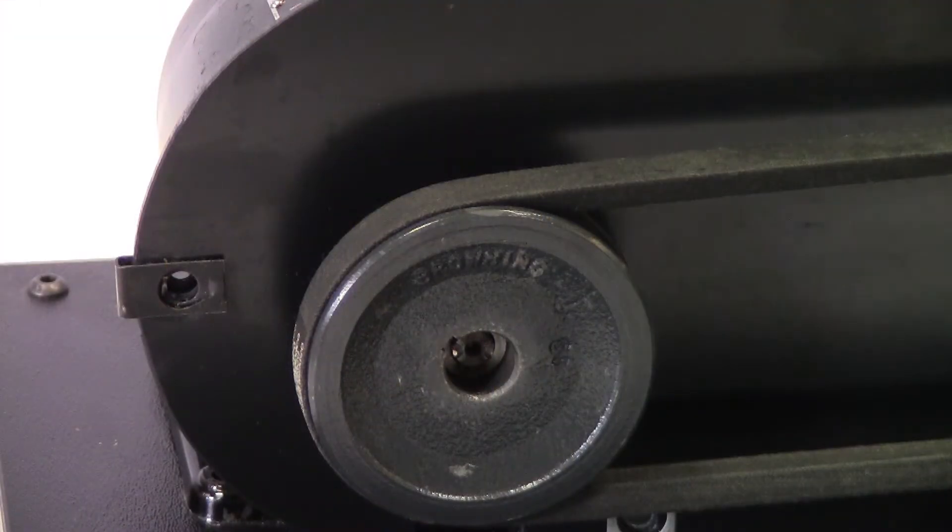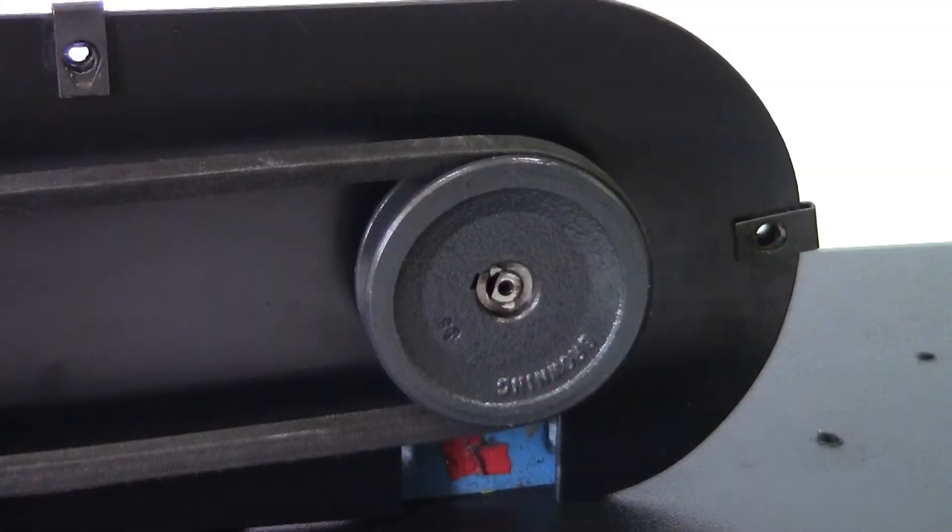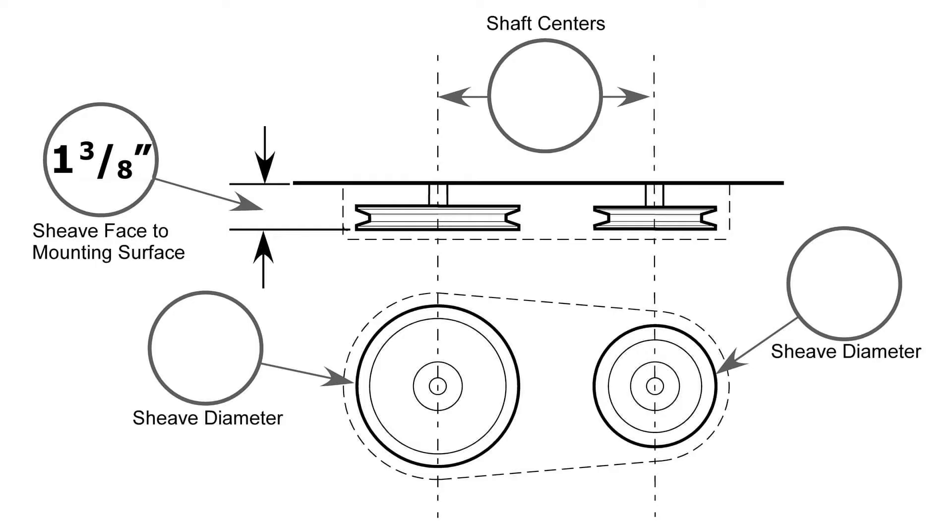The second step is to determine the width of the guard. For a standard guard this is accomplished by adding the diameter of the largest shiv plus an additional inch for clearance. In our example here the two shivs are approximately 3 and a quarter inches in diameter. If there is a significant difference between the size of the shivs consider a tapered guard.